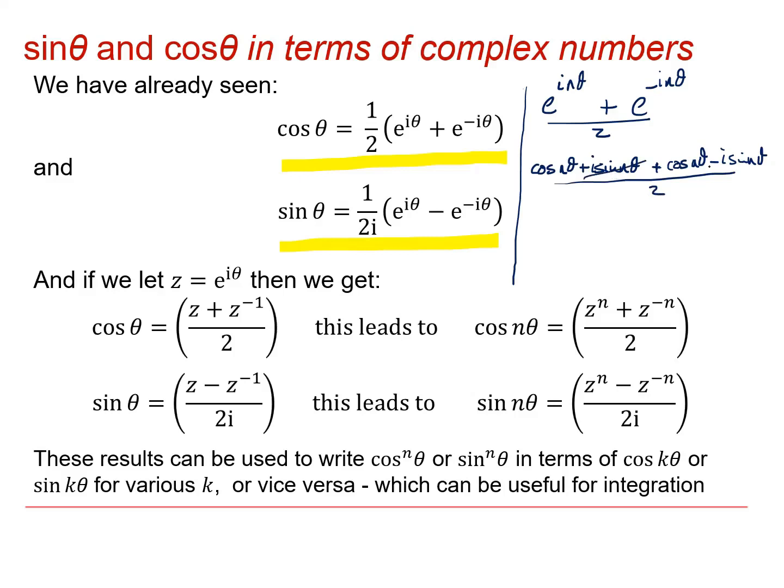Well, these two bits cancel. The i sin n theta and the minus i sin n theta. So this really does give me cos n theta.